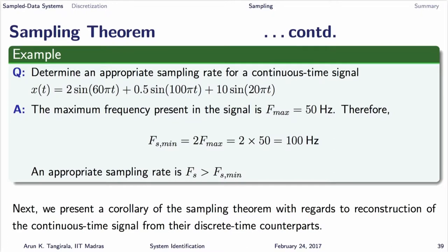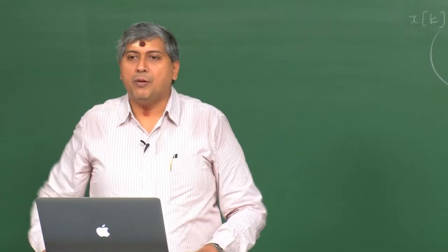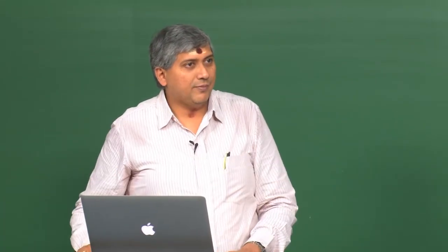For example, if you have 3 frequencies in x(t) and the maximum is 50 hertz, then the minimum sampling frequency is 100 hertz. The question is: in practice, how do I know the maximum frequency before I sample? That is what my experiment is going to tell me — it is a catch-22 problem.